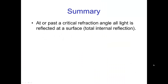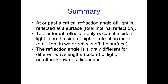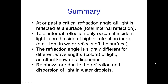In summary: at or past a critical refraction angle, all light is reflected at a surface — this is called total internal reflection. Total internal reflection only occurs if the incident light is on the side of the higher index of refraction, such as light in water reflecting off the water-air surface. The refraction angle is slightly different for different wavelengths, i.e., colors of light, and this effect is known as dispersion. Due to dispersion, we see rainbows, which result from reflection inside raindrops and the resulting dispersion separating the colors.